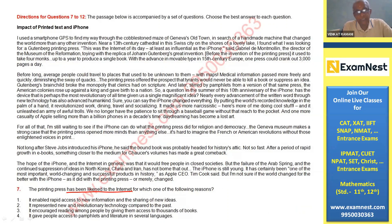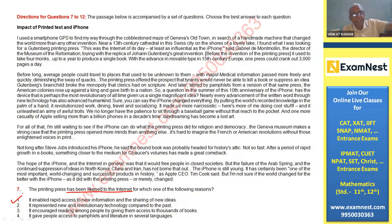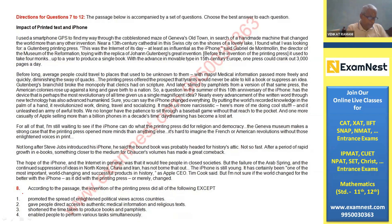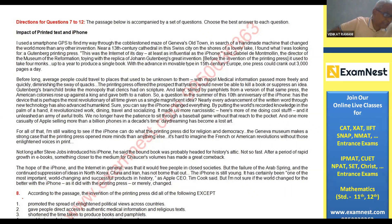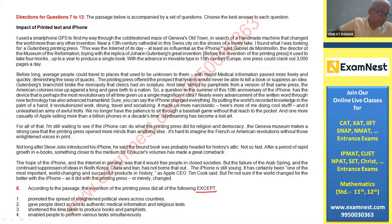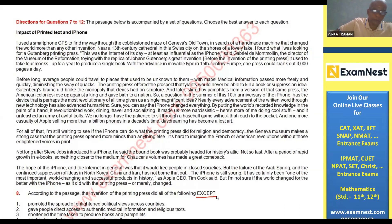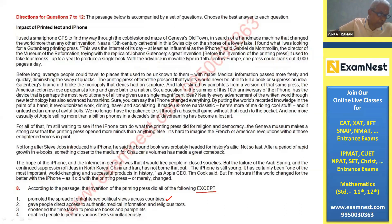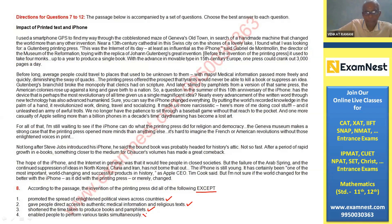The printing press has been likened to the internet because it enabled rapid access to new information and the sharing of new ideas — just as the internet does today. The next question: the invention of the printing press did all of the following EXCEPT. It promoted enlightened political views, gave people direct access to medical information and religious texts, and shortened the time taken to produce books and pamphlets. What it did NOT do is enable people to perform various tasks simultaneously — that is the correct answer.